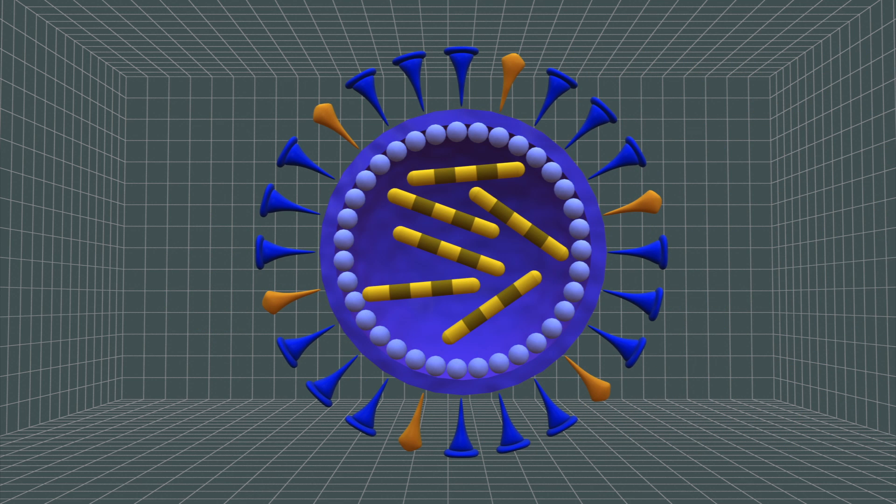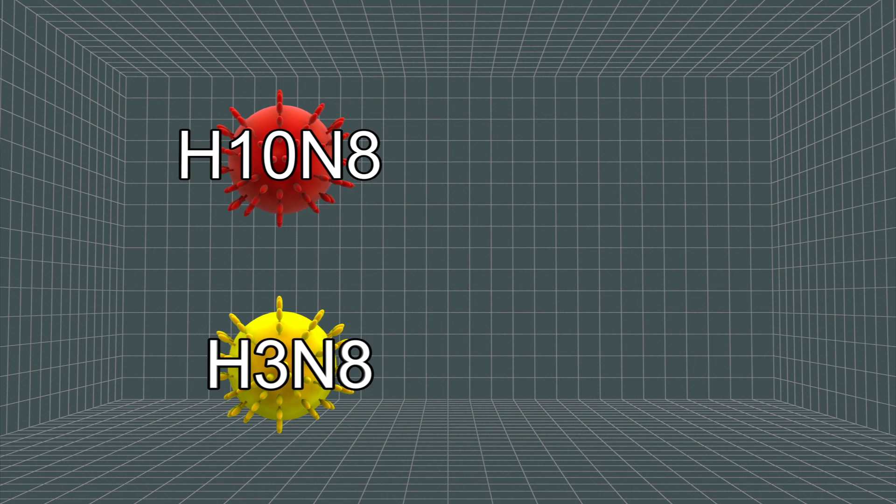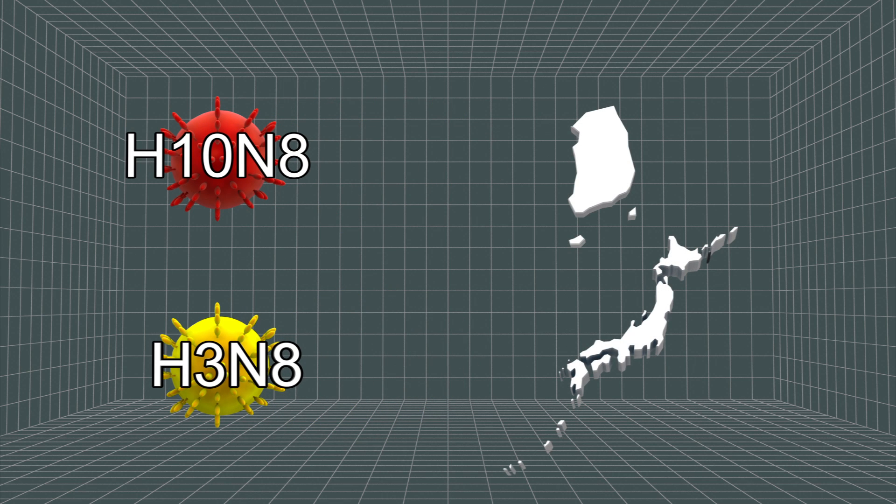Besides hemagglutinin, an influenza virus also has neuraminidase proteins, which enable the virus to leave the host cell and attack other cells. Neuraminidase proteins on the newly discovered H10N8 virus are similar to those of an H10N8 virus isolated from a mallard in South Korea and an H3N8 virus detected among birds in Japan.